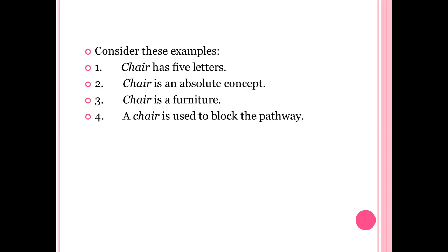In all four examples, chair has exactly the same meaning, signification, and definition — the examples do not indicate equivocal meanings of the term chair. Shifts in the supposition of terms in reasoning will lead us into error. To avoid this, it is important to identify the supposition of a particular term in a particular statement. Consider: 'Philosophy means love of wisdom; existentialism is a philosophy; hence, existentialism means love of wisdom.' This is an invalid argument, which we will explain after discussing the kinds of supposition.